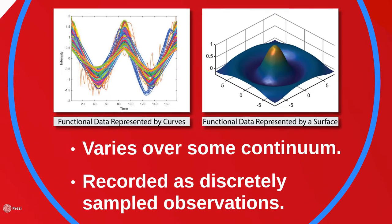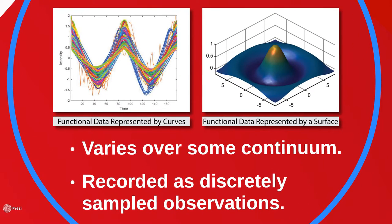So what is functional data? Functional data is curves, surfaces, or anything that varies over a continuum. However, since we cannot truly collect continuous data, it is recorded as discretely sampled observations.